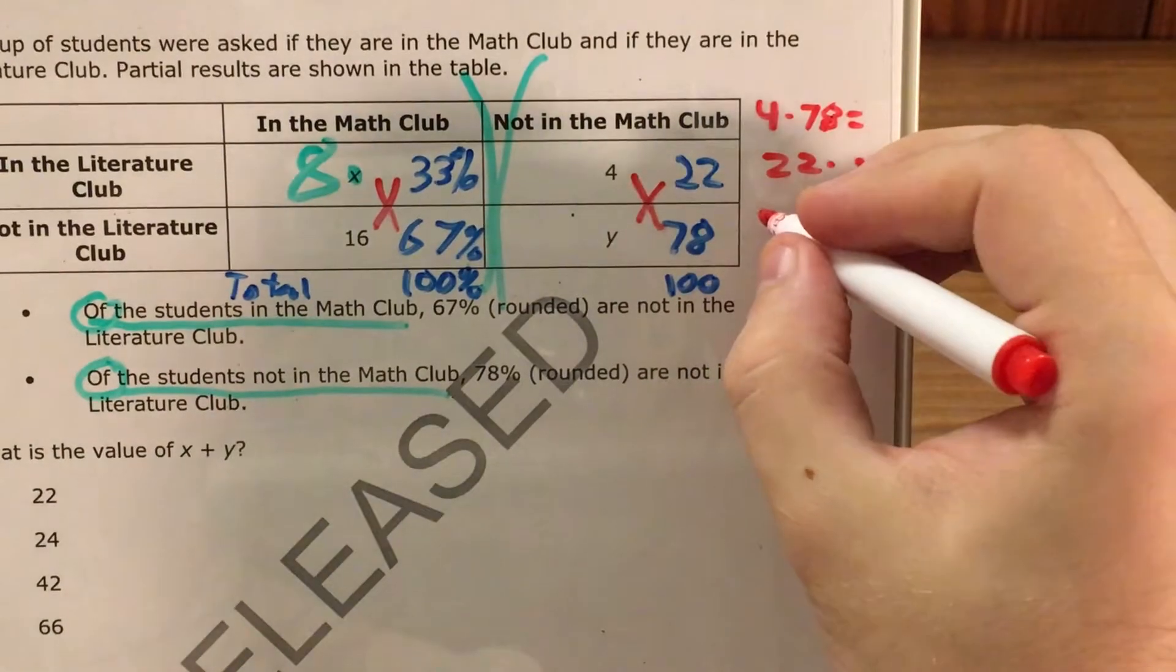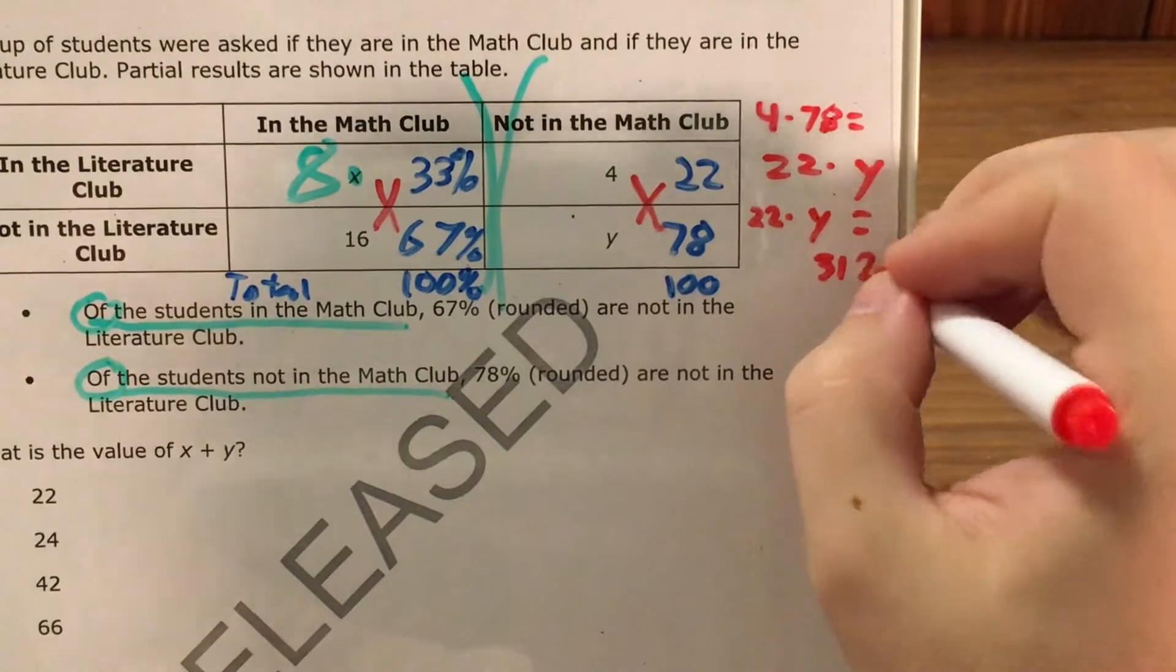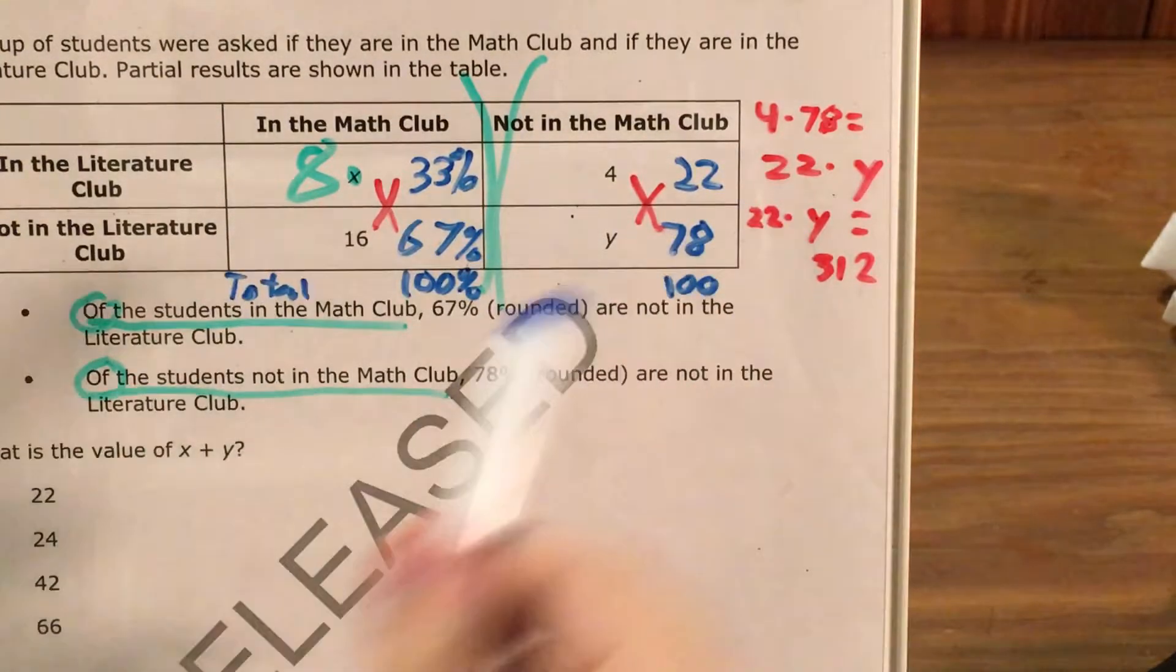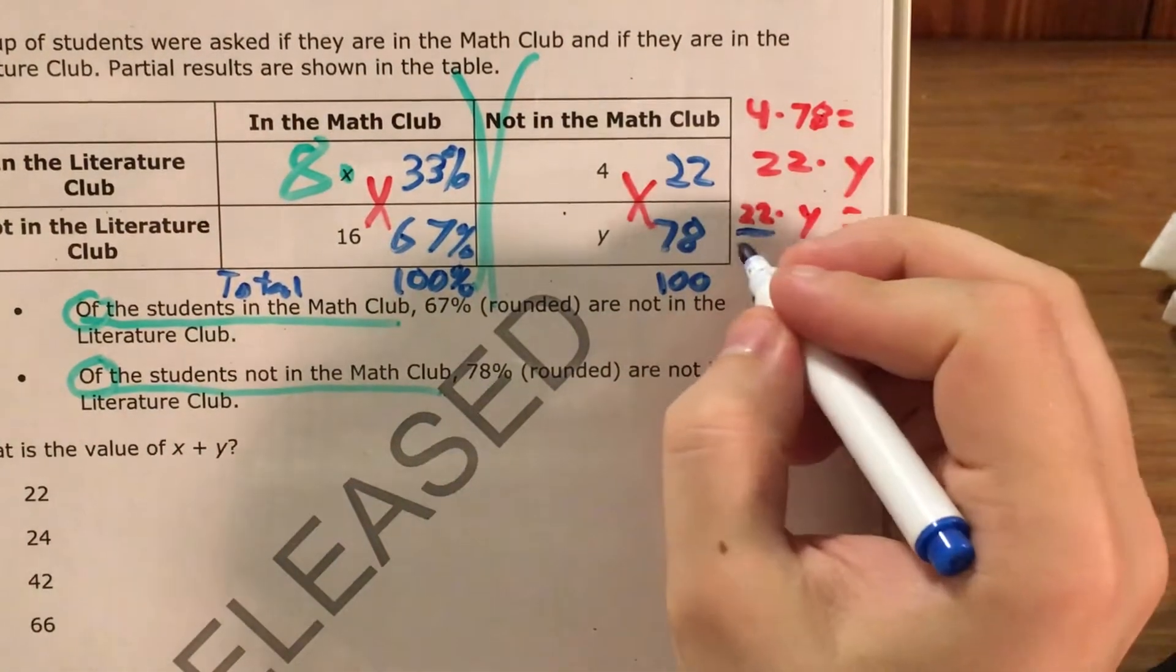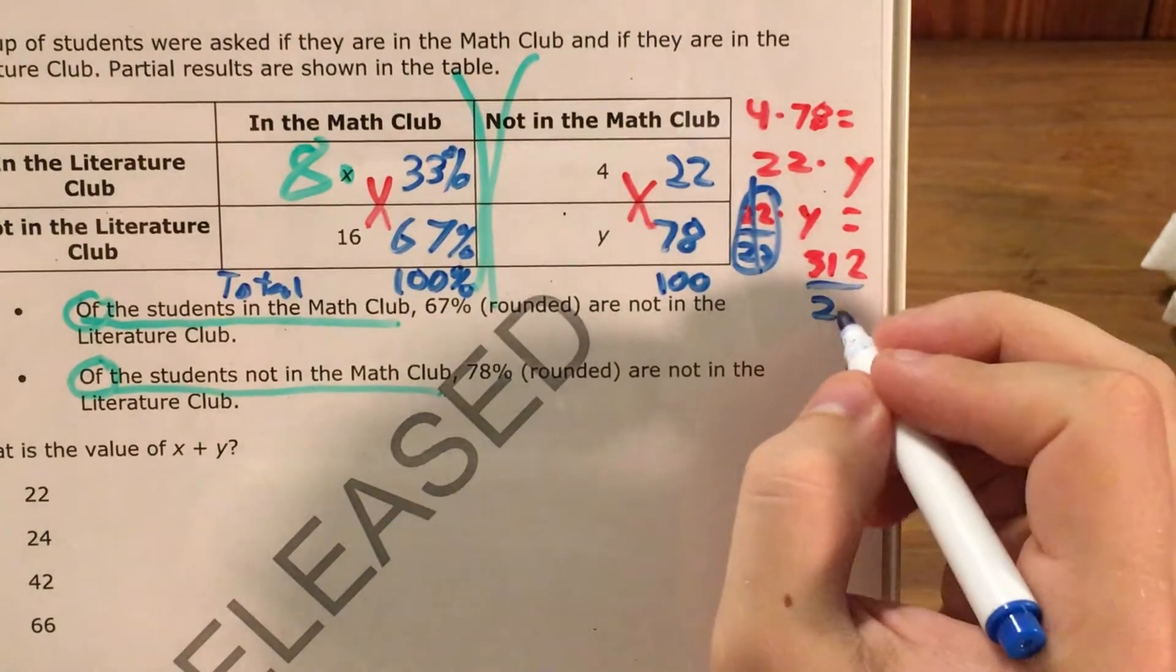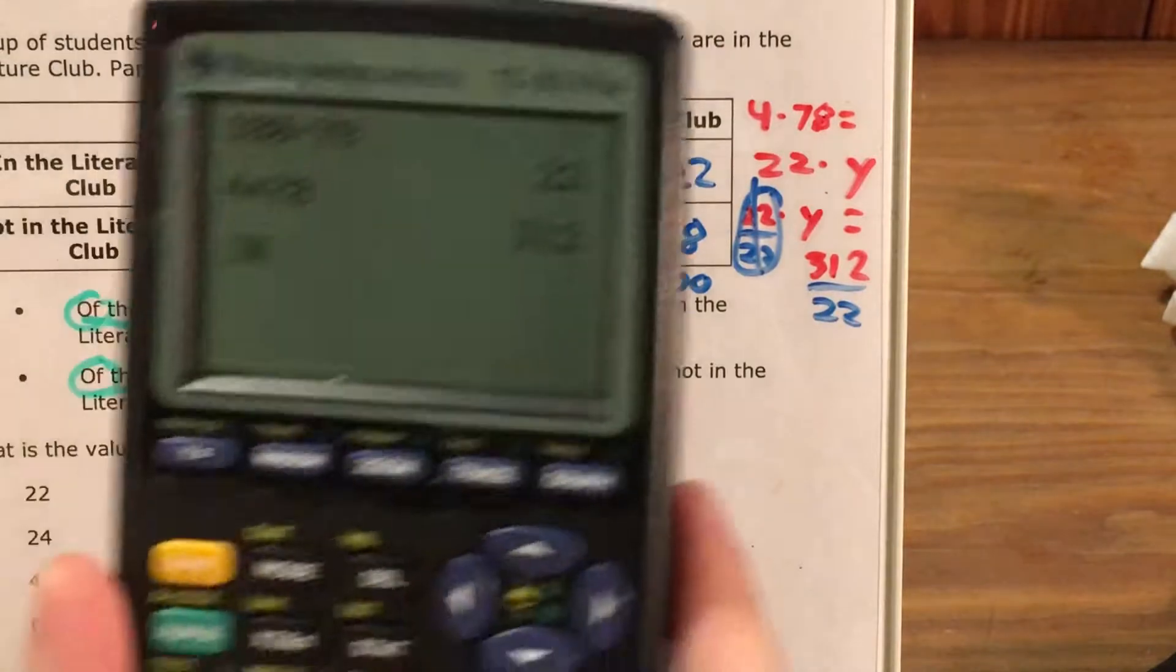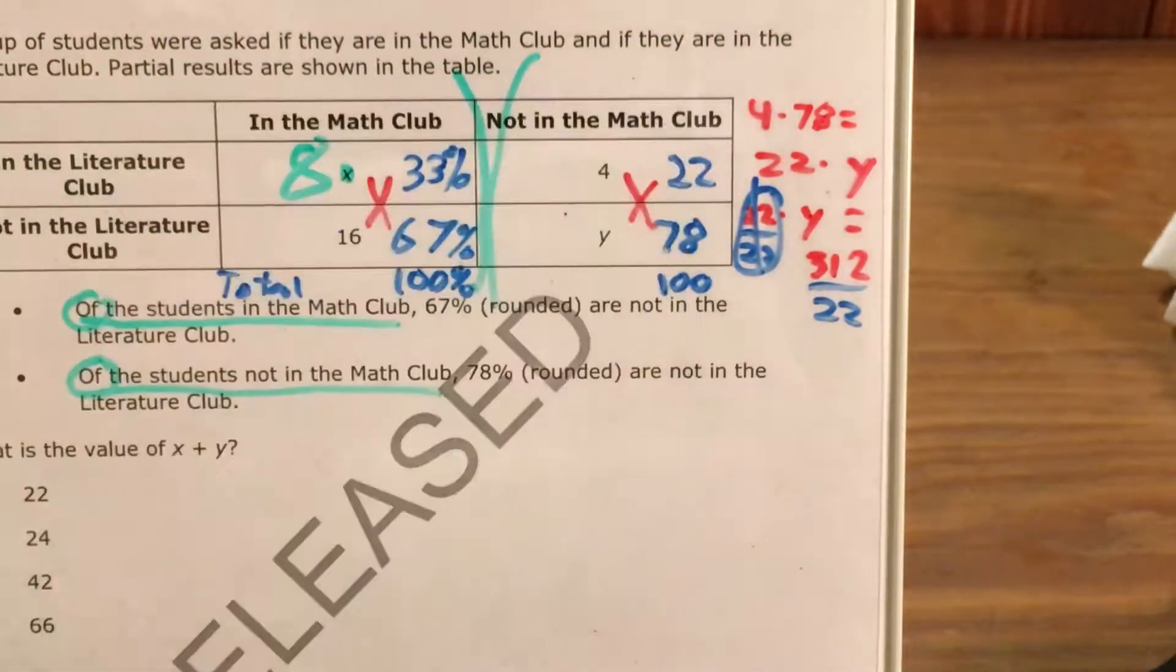So I know that 22 times y equals 312. And since I have an equation where my variable that I'm trying to get by itself is being multiplied by something, I can divide by this number here that I'm multiplying. 22 divided by 22 cancels. And now I just need to find 312 divided by 22.